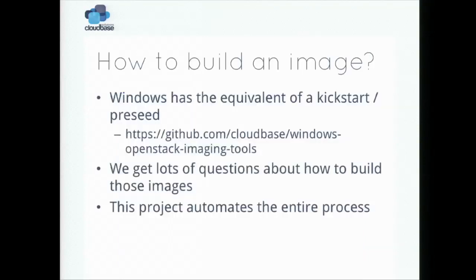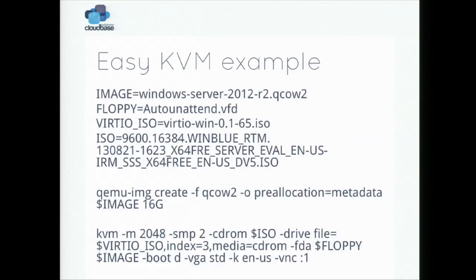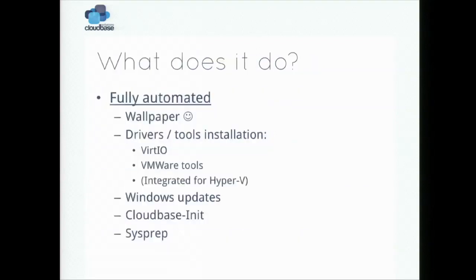For building an image, lots of people are asking us how to build a Windows image, so we decided to provide our scripts - fully unattended and completely automated, similar to kickstart. You just provide the name of the image, a floppy containing an unattended XML file with all the instructions, and the ISO. Then you create the QCOW image and issue the KVM command to run the machine. It will do everything automatically and shut down when finished - no need to press a single button in the Windows UI.